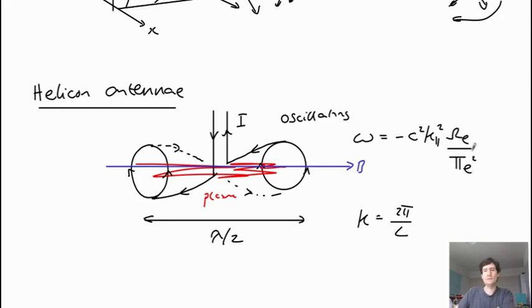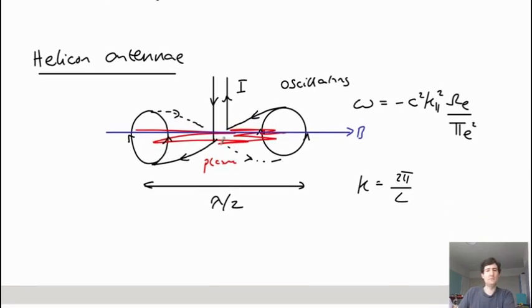So we'll say that then depends on the density. So this needs to be tuned to match the plasma density. And this can then resonate and induce whistler waves in the plasma, which then are absorbed at the electron cyclotron frequency.